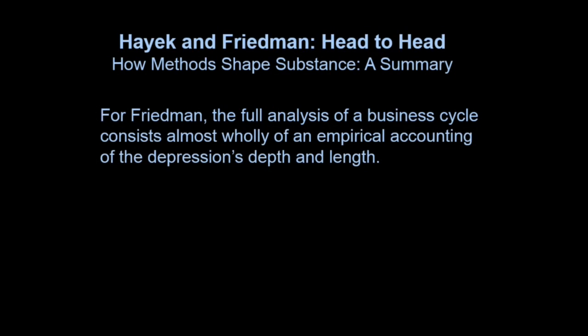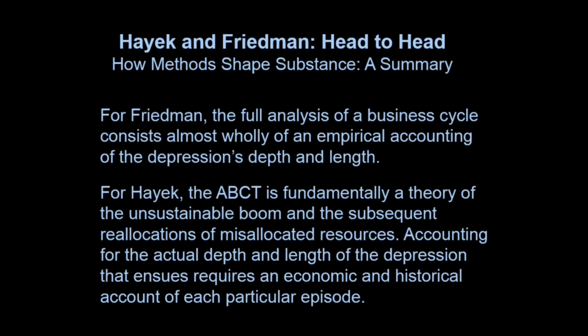For Friedman, the full analysis of a business cycle consists almost wholly of an empirical accounting of the depression's depth and length — especially the depth — in terms of the collapse in the money supply. For Hayek, Austrian theory is fundamentally a theory of the unsustainable boom and the subsequent reallocation of misallocated resources. Accounting for the actual depth and length of the depression that ensues requires an economic and historical account of each particular episode.